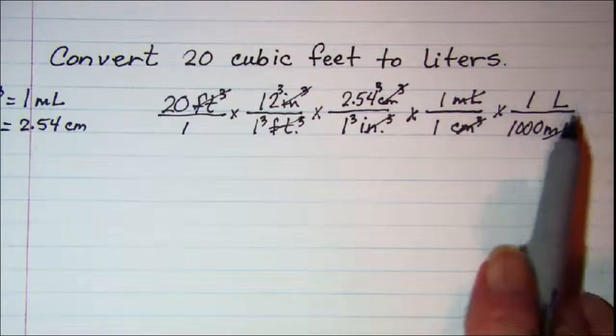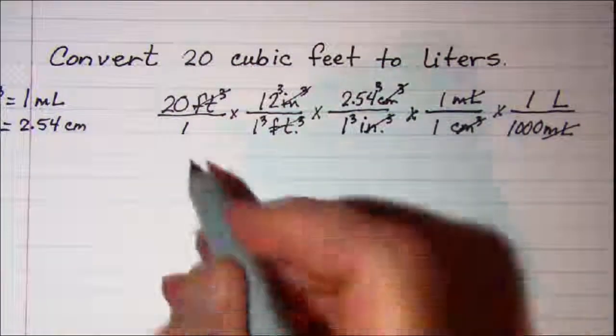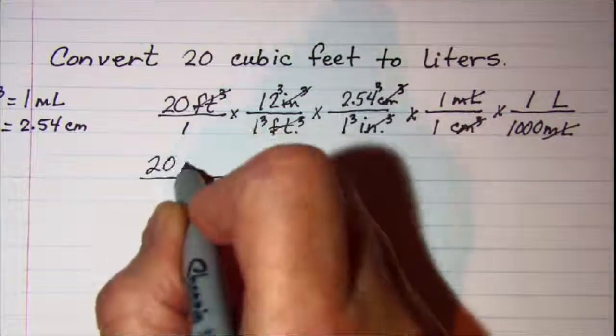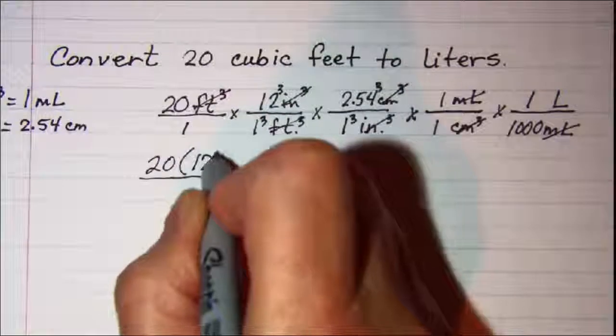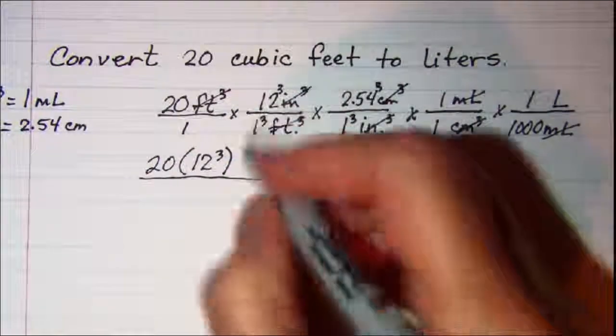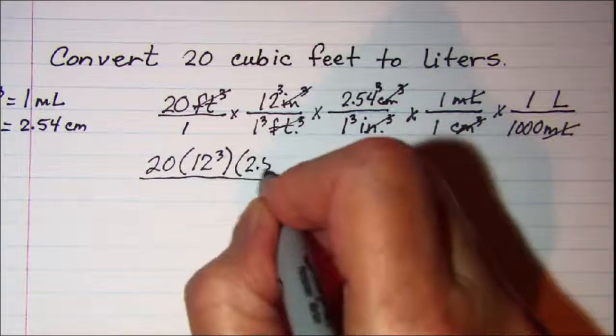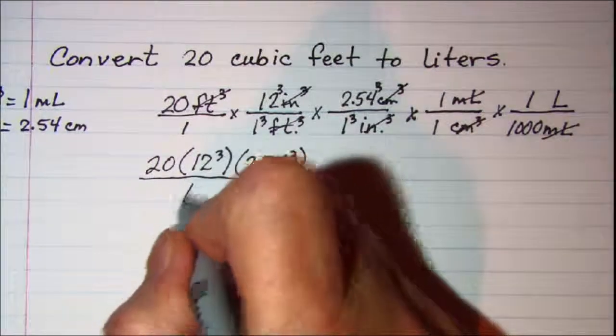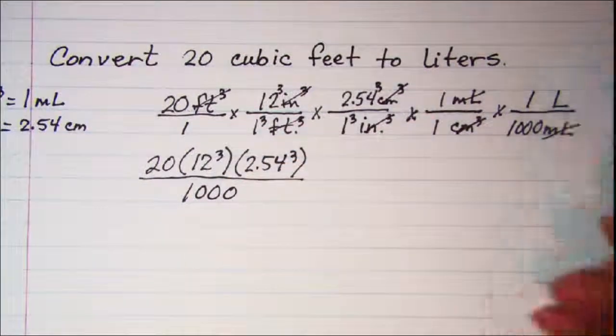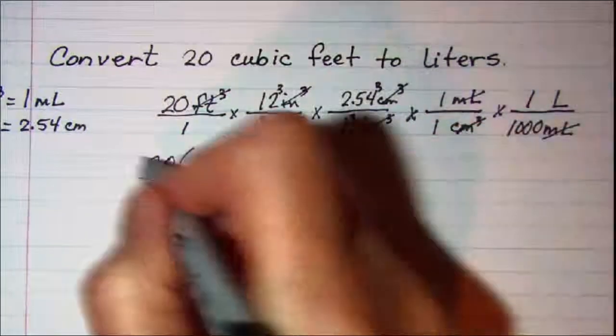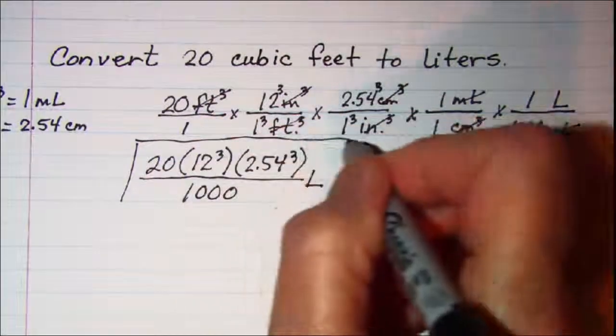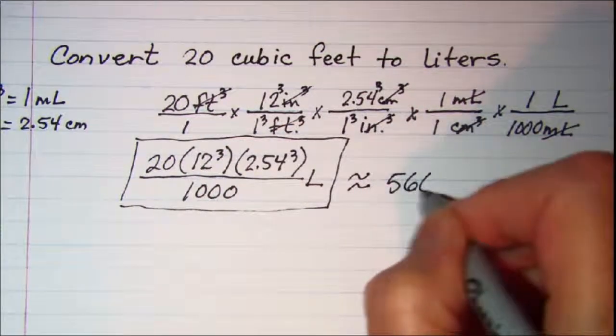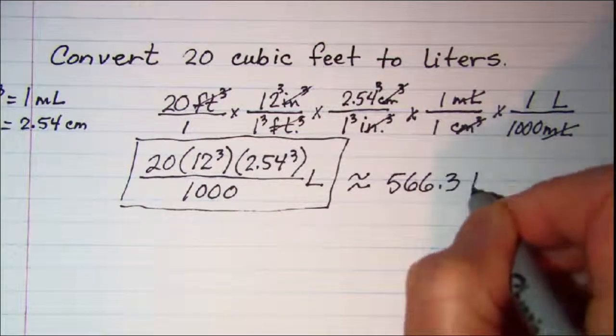So now I have taken it to liters I am ready to write my answer. I will write it with factors first: 20 times 12 cubed times 2.54 cubed divided by 1000 and this is liters. So this is my answer in factored form and approximately 566.3 liters.